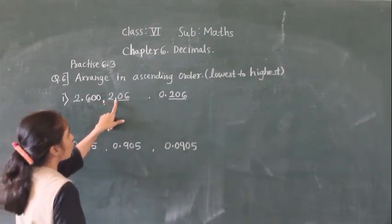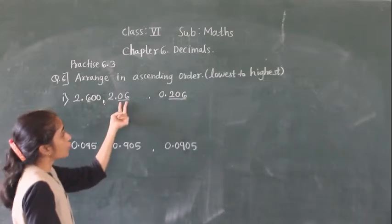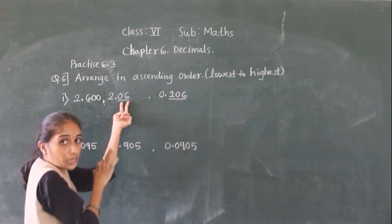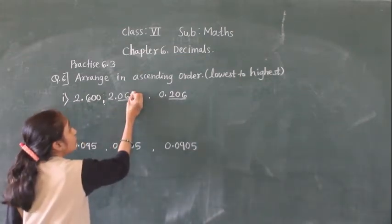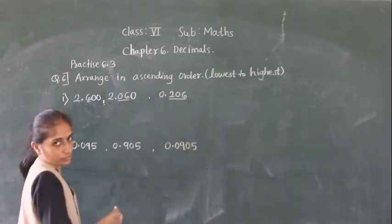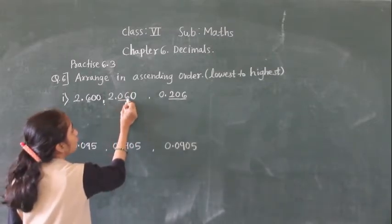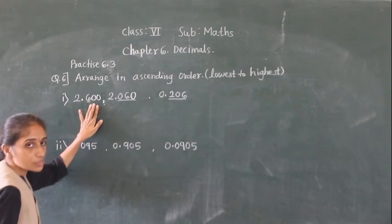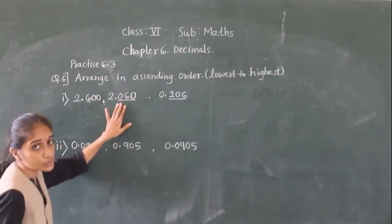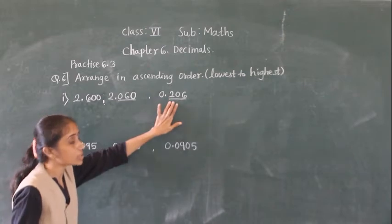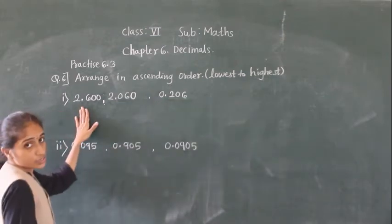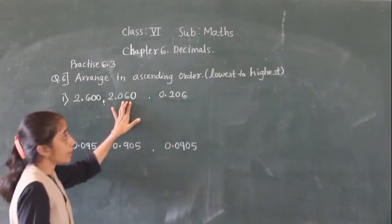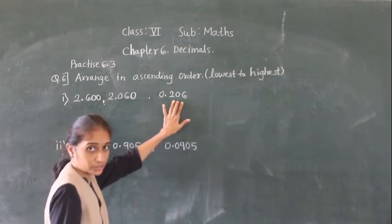Now for 2.06, after the decimal point there are two digits, but we want three digits. So we add one zero to get 2.060. After the decimal point we now have three digits. And 0.206 already has three digits after the decimal point. So in all three numbers we now have three digits after the decimal point.